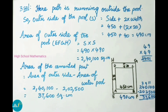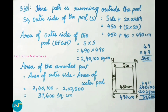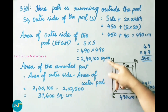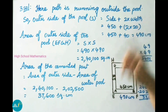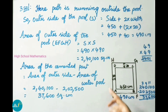Next we find area of outer side EFGH, which is side into side, equal to 490 into 490. That is 49 into 49 equals 2401, giving 2,40,100 square centimeter. The area of the cemented part equals area of outer side minus area of water pool, which is 2,40,100 minus 2,02,500.